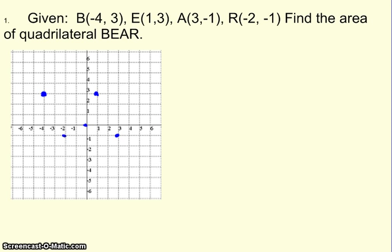And R is at negative 2, negative 1. So 2 to the right and 1 down. Go ahead and connect them. It would be smart to label them B, E, A, and R.